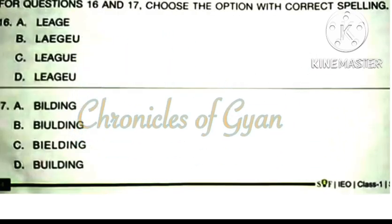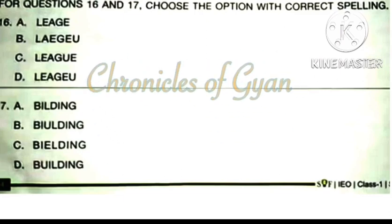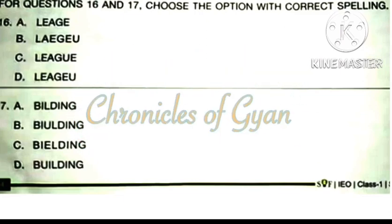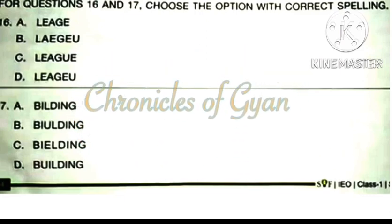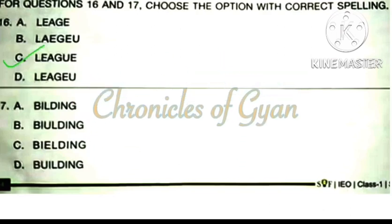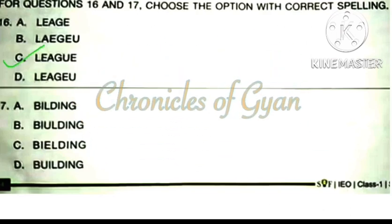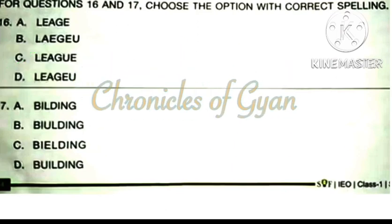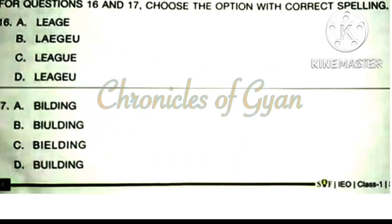For questions 16 and 17, choose the option with correct spelling. Question 16: The correct spelling is option C: L-E-A-G-U-E. It means a group of sports clubs. You must have heard about Indian Premier League, IPL.